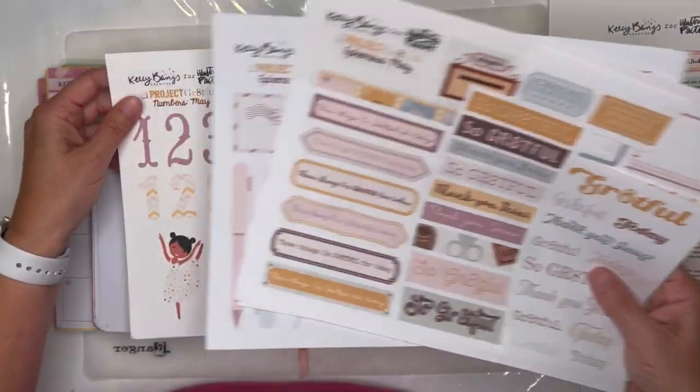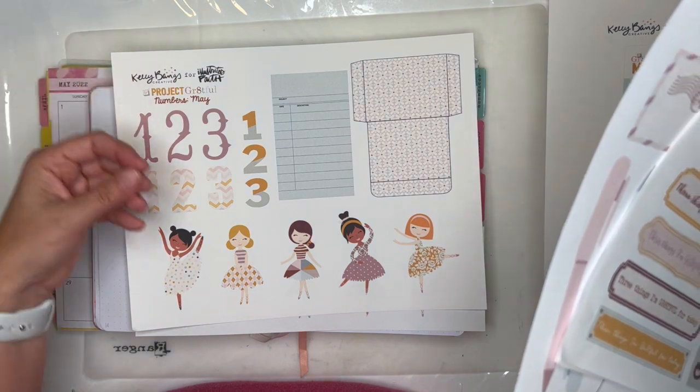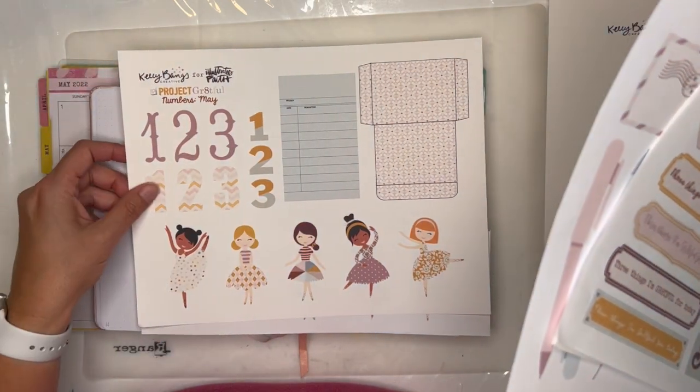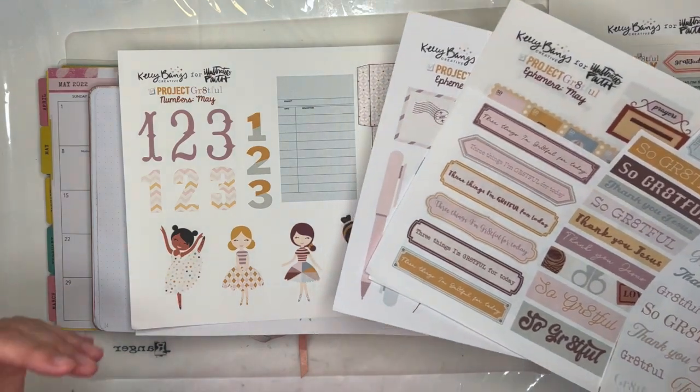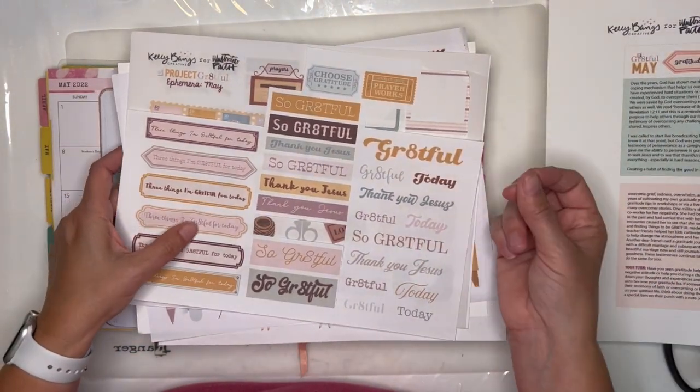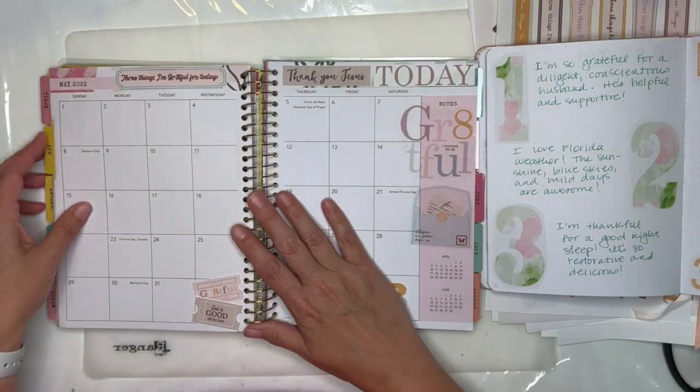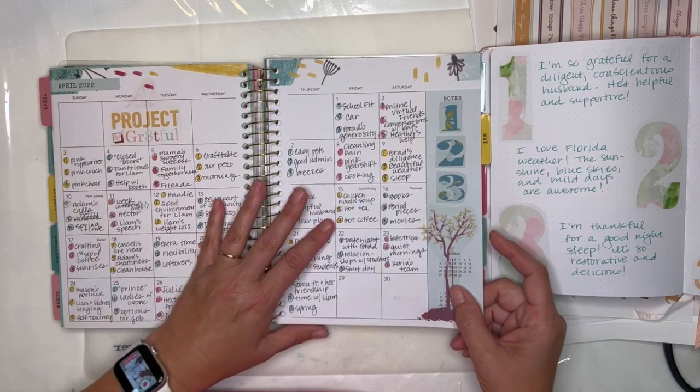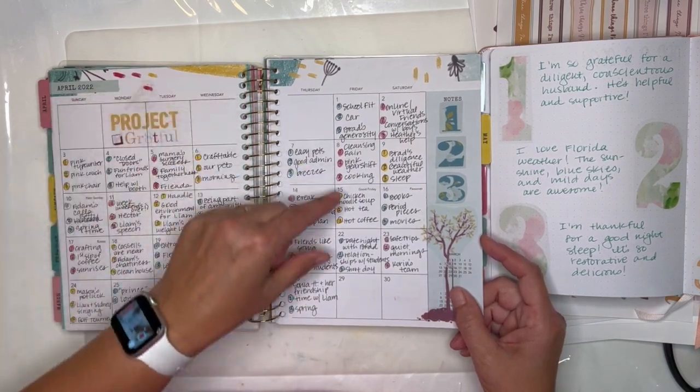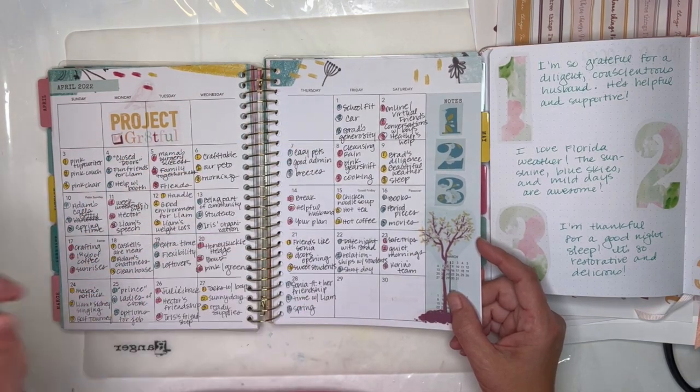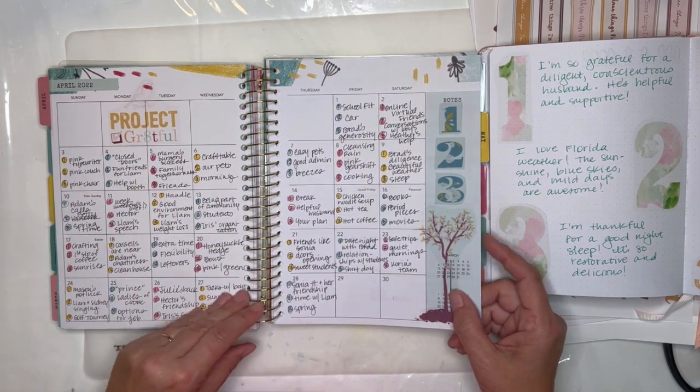There's three different sets that you can get. This is the numbers. I did not print out all of the numbers. You get several pages of just different designs of one, two, three because the thought in Project Grateful is that every day you come up with three things that you are grateful for.